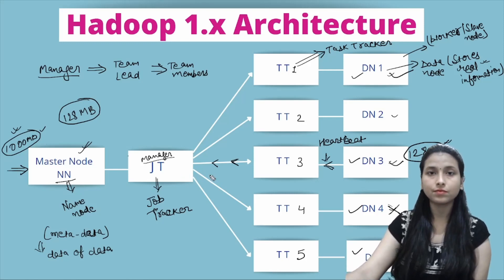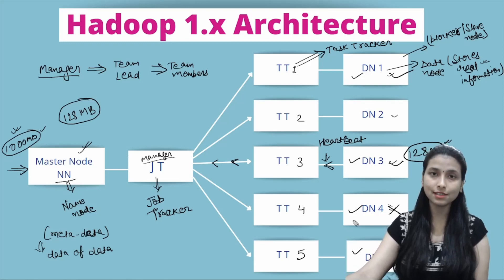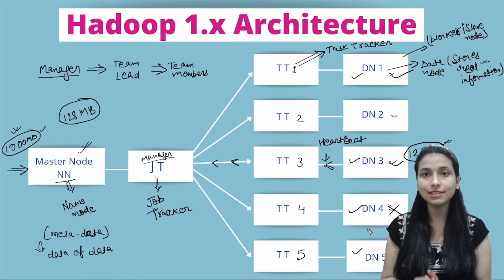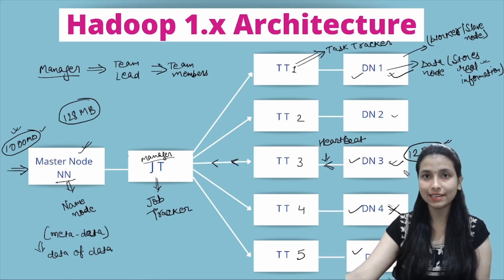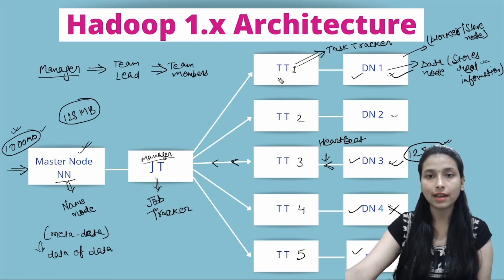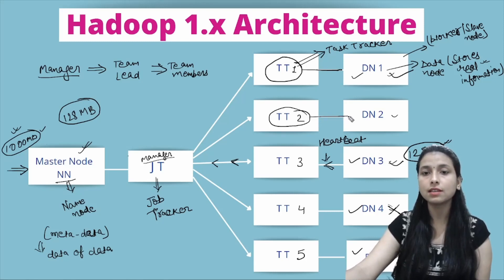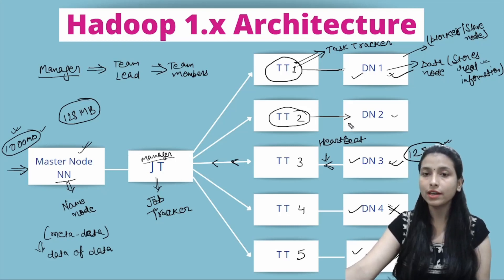In total, the Job Tracker is responsible for two things: first, to allocate tasks to the Data Nodes; and second, to keep track of the status of the work — checking whether the file is being properly stored. The difference between Job Tracker and Task Tracker is that the Job Tracker keeps track of all Data Nodes overall, while each Task Tracker is responsible for keeping track of only its own individual Data Node.